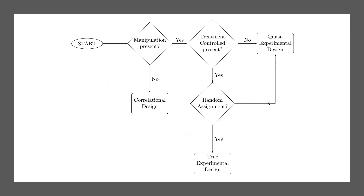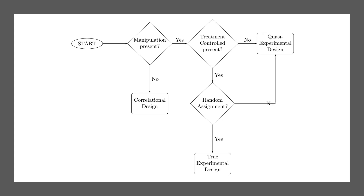In summary, to classify research designs, you may use this illustration. First, we ask if the independent variable is manipulated. If no, then it is a correlational design. Then we ask if there are treatment and control groups. If no, then it is a quasi-experimental design. Finally, we ask if the subjects or participants were randomly assigned. If yes, then it is a true experimental design; otherwise, it is a quasi-experimental design.